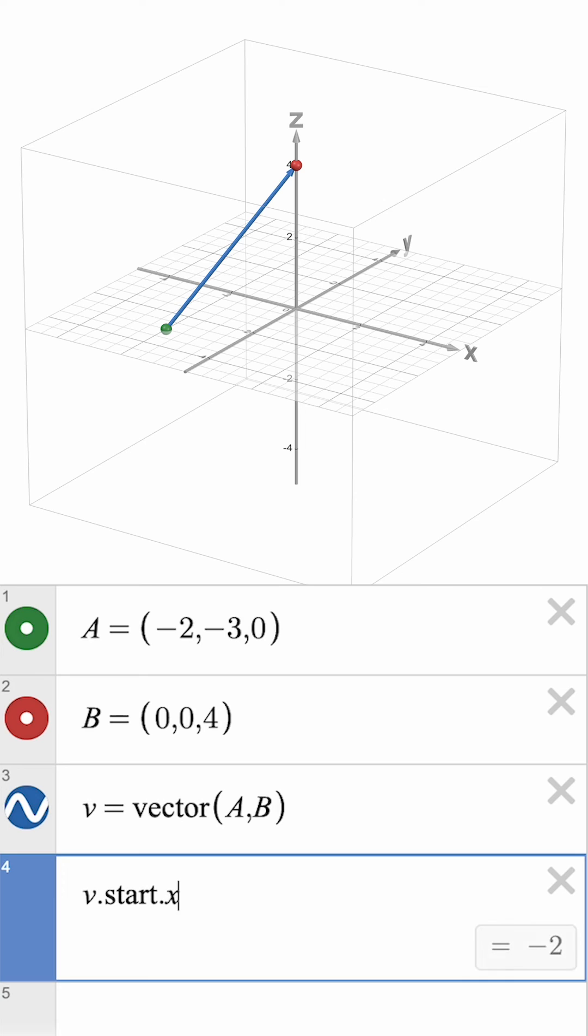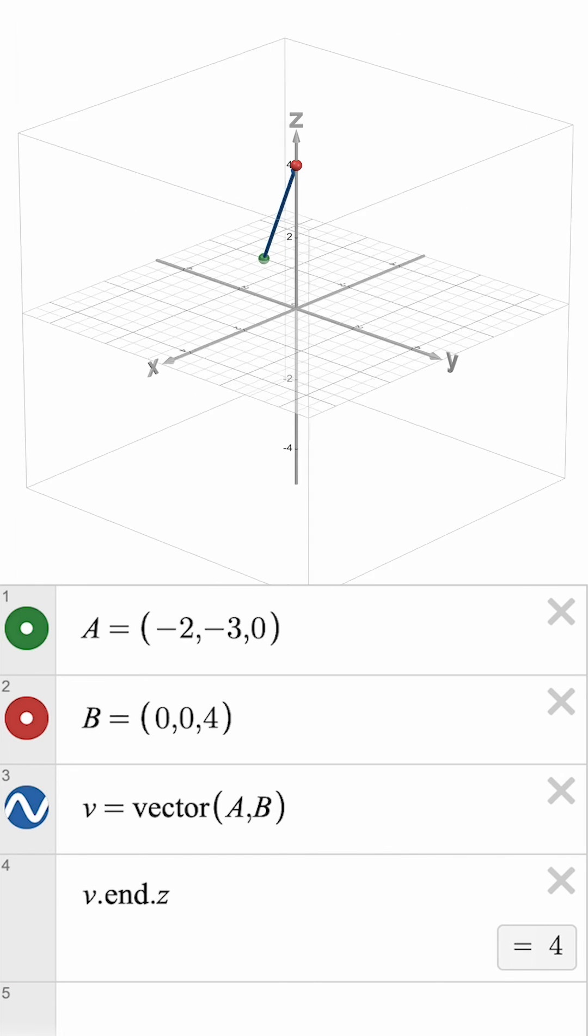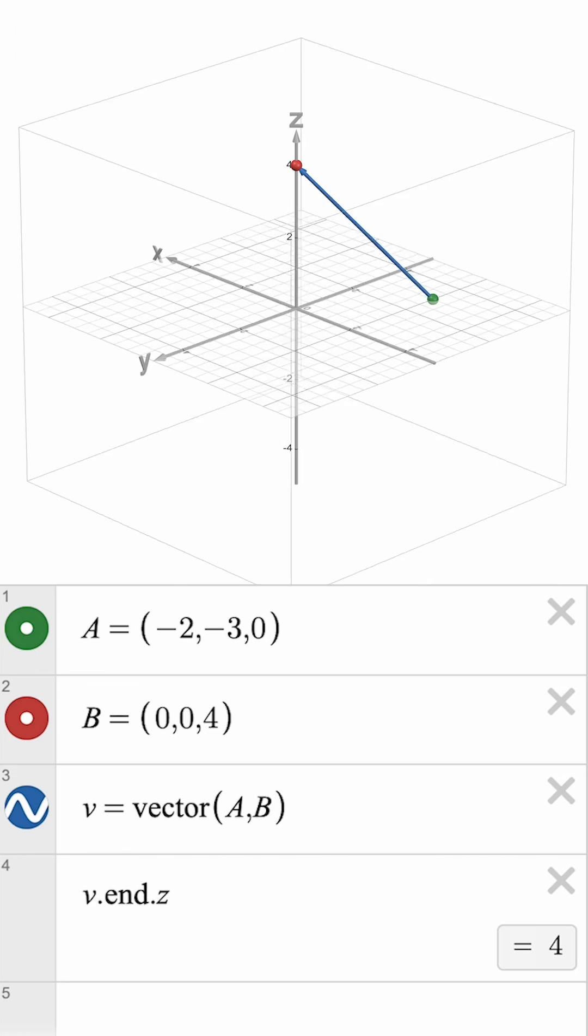v.start.x shows us the x component of our starting point is negative 2, and v.end.z shows us the z component of our ending point is 4. For more tips and tricks with the Desmos tools, head to help.desmos.com.